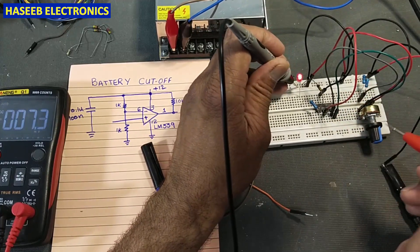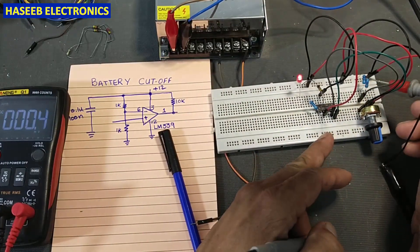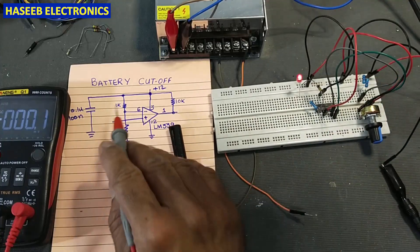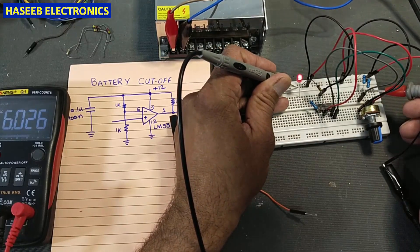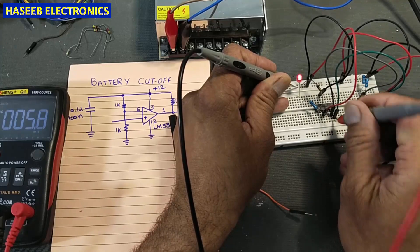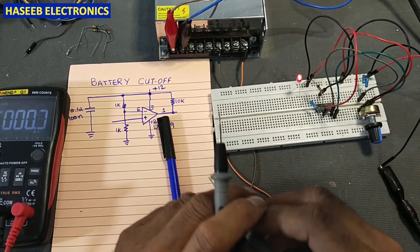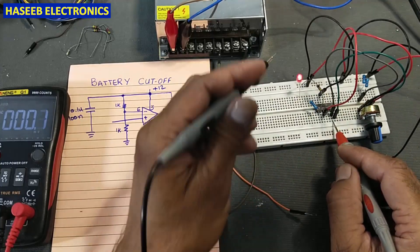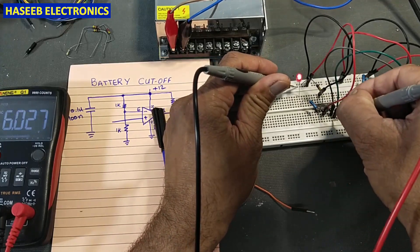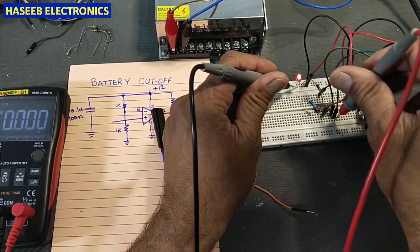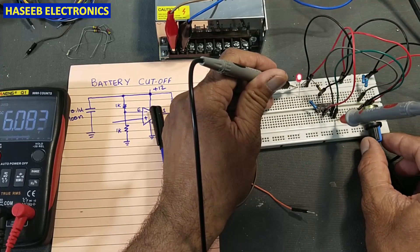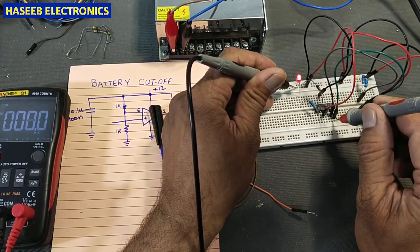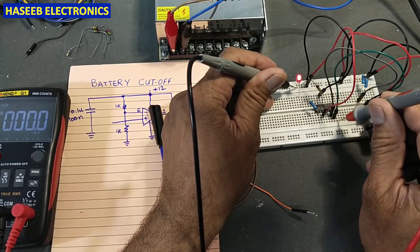The reference voltage at pin number 6 is 6.021V because I connected two resistors between the positive and negative lines. So at pin 6 we have approximately 6.026V. When pin number 7 (the non-inverting input) increases above this level — above 6.027V — the comparator will respond.